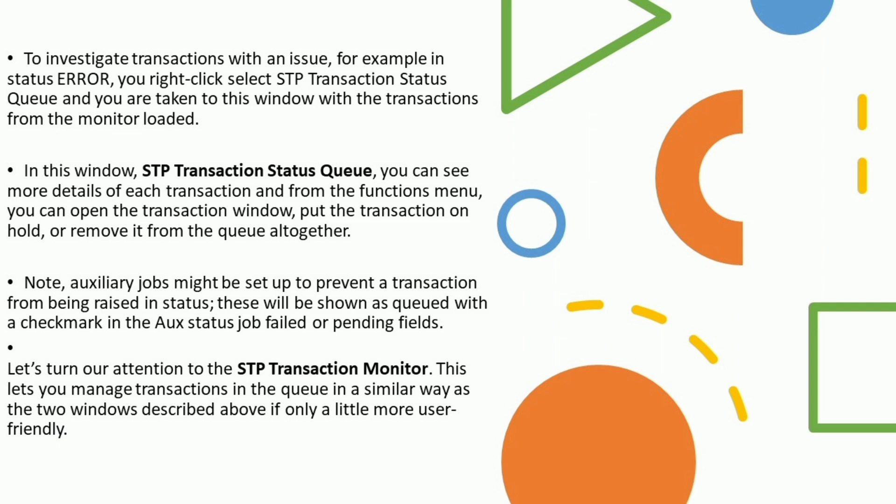To investigate transactions with an issue — for example, in status Error — right-click, select STP Transaction Status Queue, and you are taken to that window with the transactions from the monitor loaded. In this window you can see more details of each transaction, and from the Functions menu you can open the transaction window, put the transaction on hold, or remove it from the queue altogether.